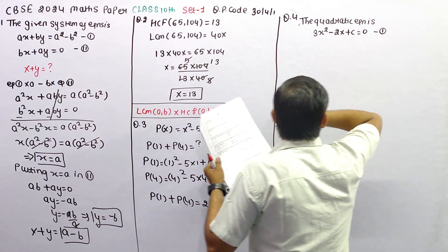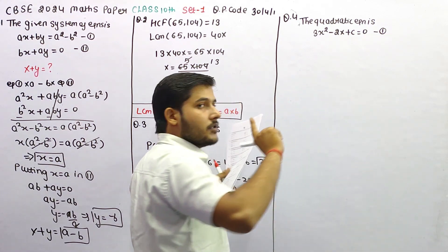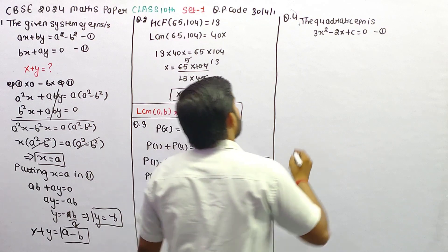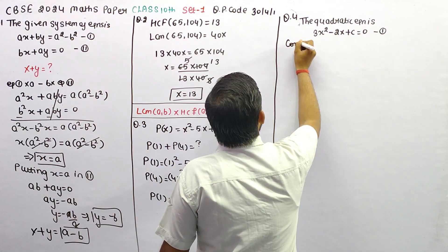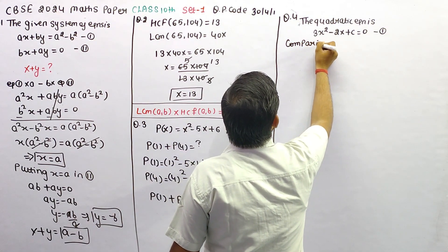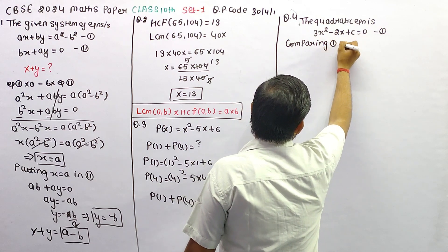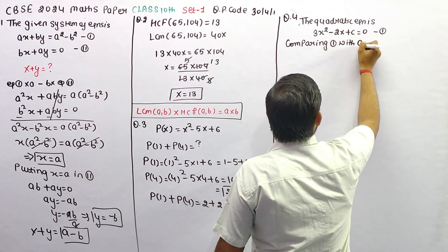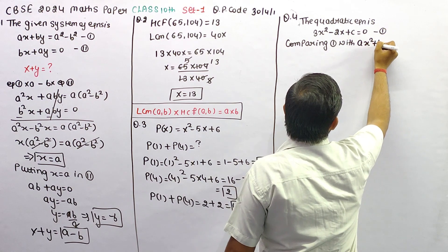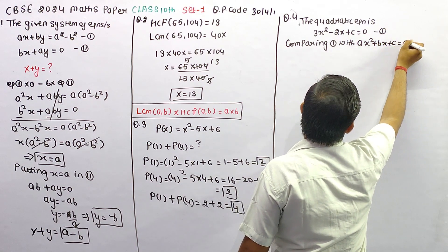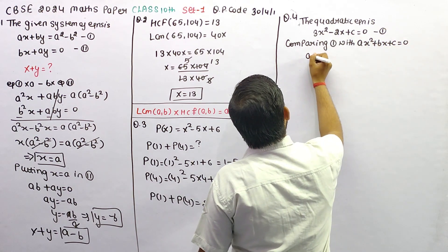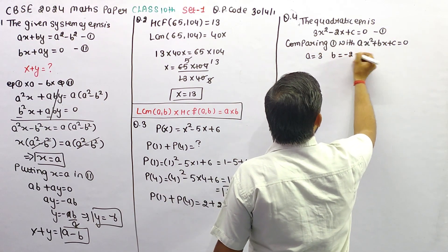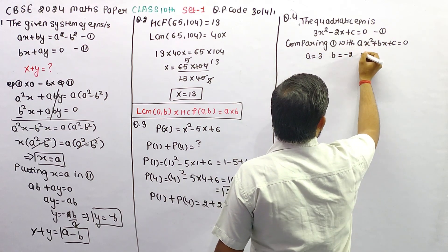इसे पहले solve करते हैं। अब हमारे पास quadratic equation की standard form क्या होती है, उससे इसे compare कर लेते हैं। Comparing with standard form: ax² + bx + c = 0. तो a आगया 3, b आगया minus 2, और c आगया c।